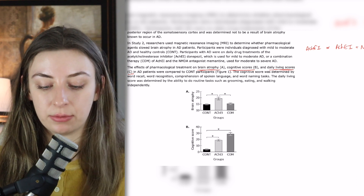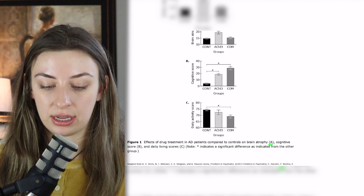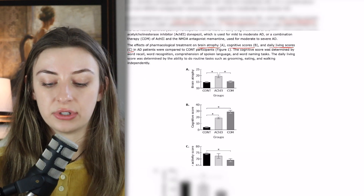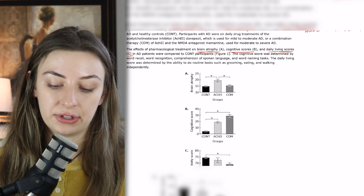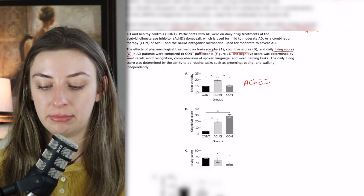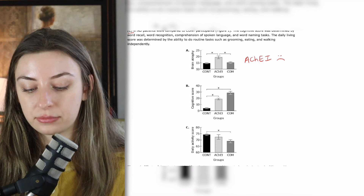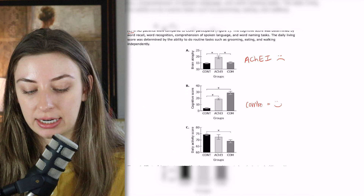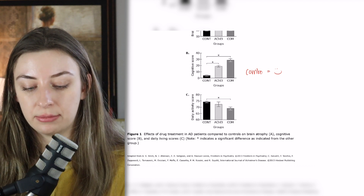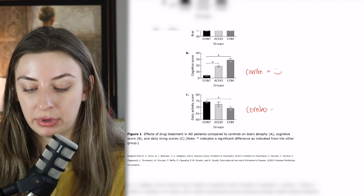Now let's interpret the figures. The caption says: effects of drug treatment in Alzheimer's patients compared to controls on brain atrophy (A), cognitive score (B), and daily living scores (C); a star indicates a significant difference. Those given just the acetylcholine esterase inhibitor had significantly more brain atrophy — so acetylcholine esterase inhibitor is bad for that. In the cognitive score, the combination therapy won out. But for the daily activity score, the control actually had the best score, and it was only significantly different from the combo therapy, so combo was bad for daily living.